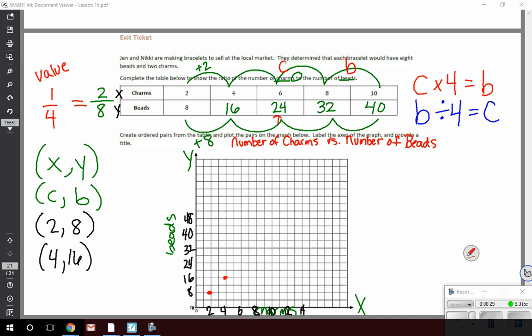So six to 24, writing as an ordered pair would be six comma 24. So I'm going to go ahead and I'm going to graph that one. The next in line is eight to 32. So eight comma 32 is right here. And ten to 40 is right there. So now we've gone ahead and we've graphed.